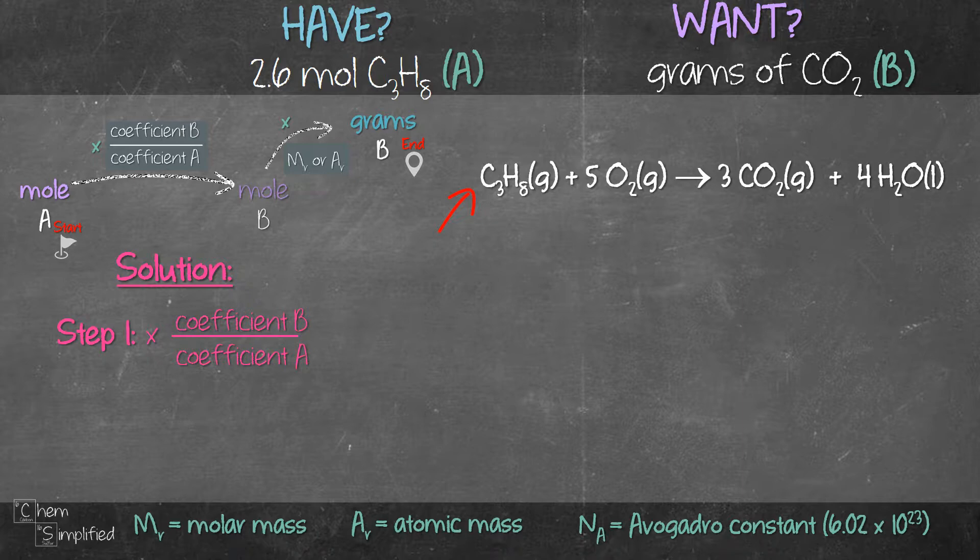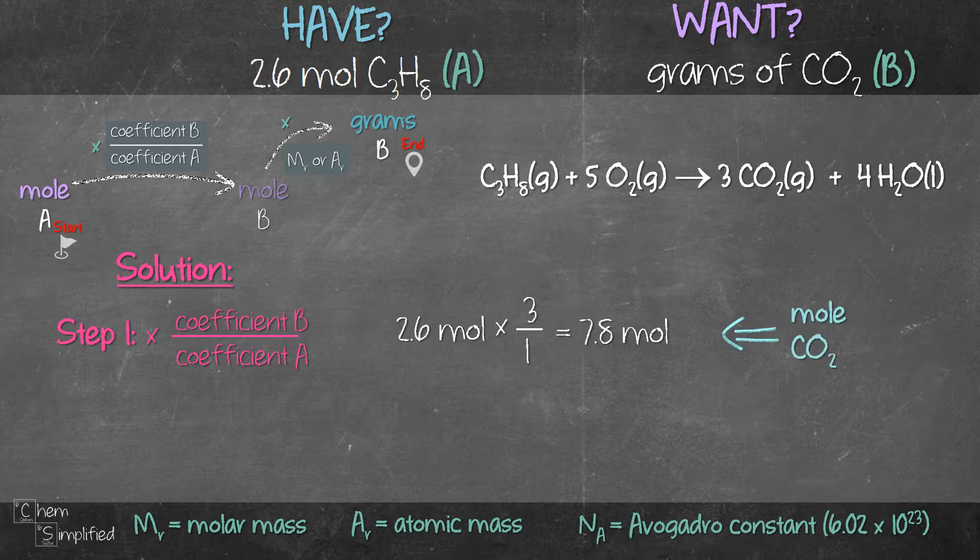So we take 2.6 mole and multiply with 3, divide by 1 and that will give us 7.8 mole. That is the mole of CO2.